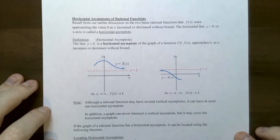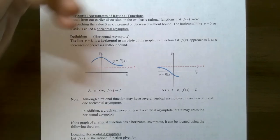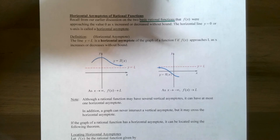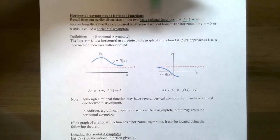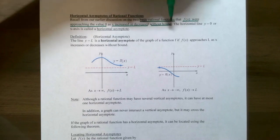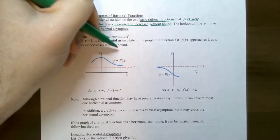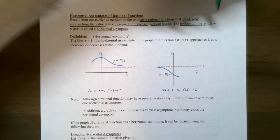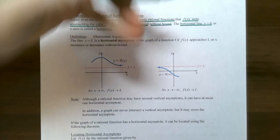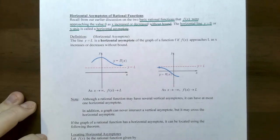Now let's talk about horizontal asymptotes. In our two basic functions — 1/x and 1/x² — the y values approached y = 0 whenever x increased or decreased without bound. So at the far left and far right ends of the graph, the values were getting closer and closer to the x-axis. The line y = 0 is a horizontal line (y equals a number) and it's called a horizontal asymptote because the y values approach the x-axis but never actually get there.